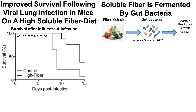Looking at improved survival after consumption of a high-soluble fiber diet after influenza A lung infection — this data is in young female mice. We're looking at survival plotted against time after infection, comparing control-diet animals versus a high-fiber diet. Controls consumed 30% of their diet from cellulose, a poorly fermentable fiber, while the high-fiber group consumed 30% inulin, a soluble fiber fermented by gut bacteria to produce short-chain fatty acids. Average survival for the control diet was about 9 days, while mice on the high-soluble fiber diet lived significantly longer — 14 days — suggesting an important role for soluble fiber in improving defense against viral lung infection.